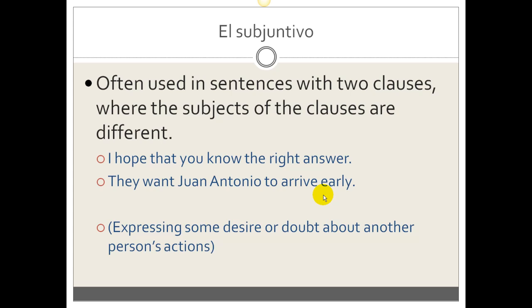For example, this sentence in Spanish would use the subjunctive: "I hope that you know the right answer." We have two verbs, hope and know. "I hope," the subject is I; "that you know," the subject is you. "They want Juan Antonio to arrive early," same thing. Want is one verb, arrive is another, and two different subjects: they and Juan Antonio.